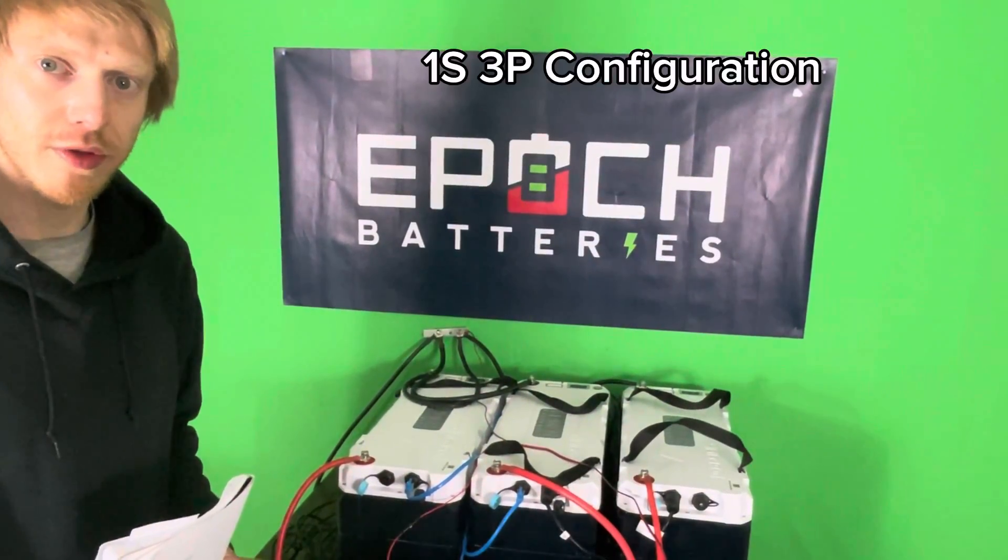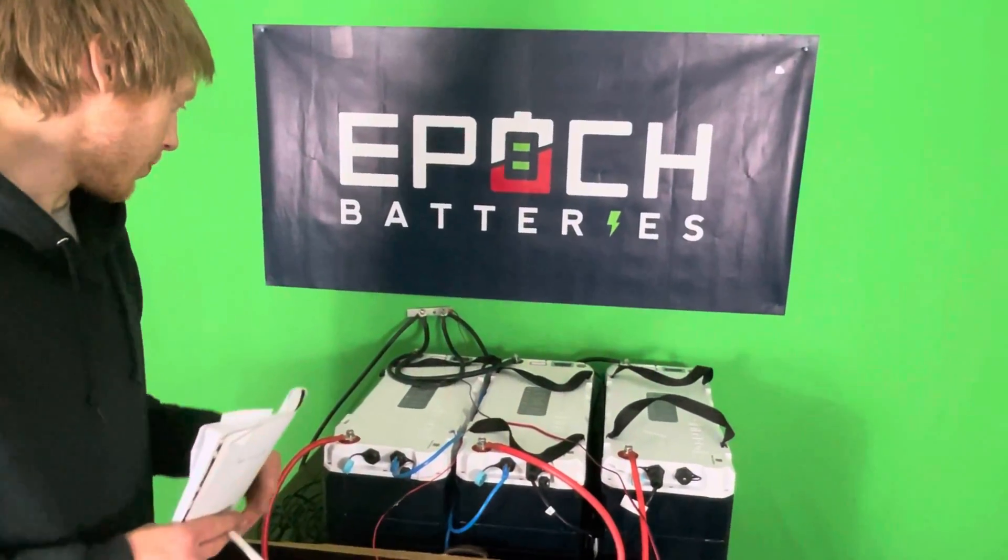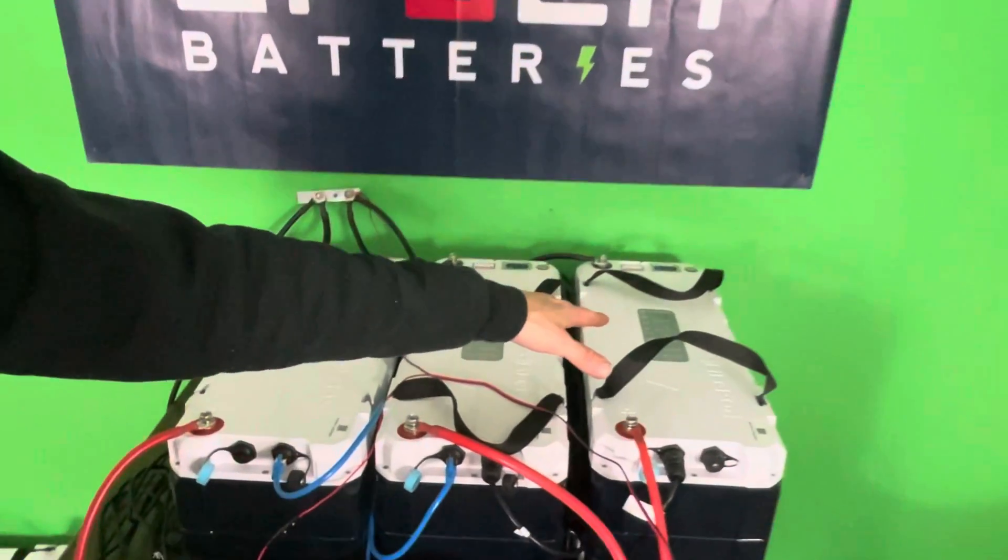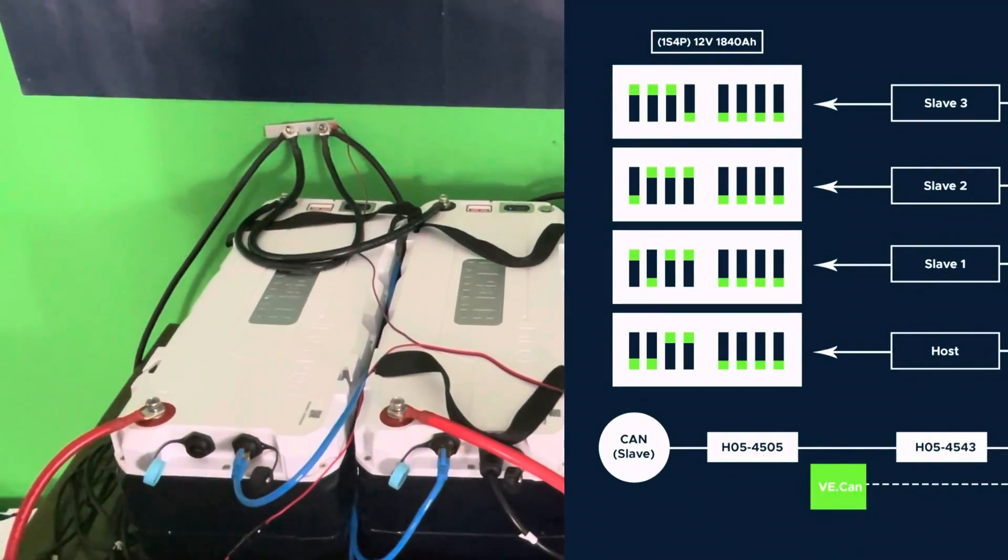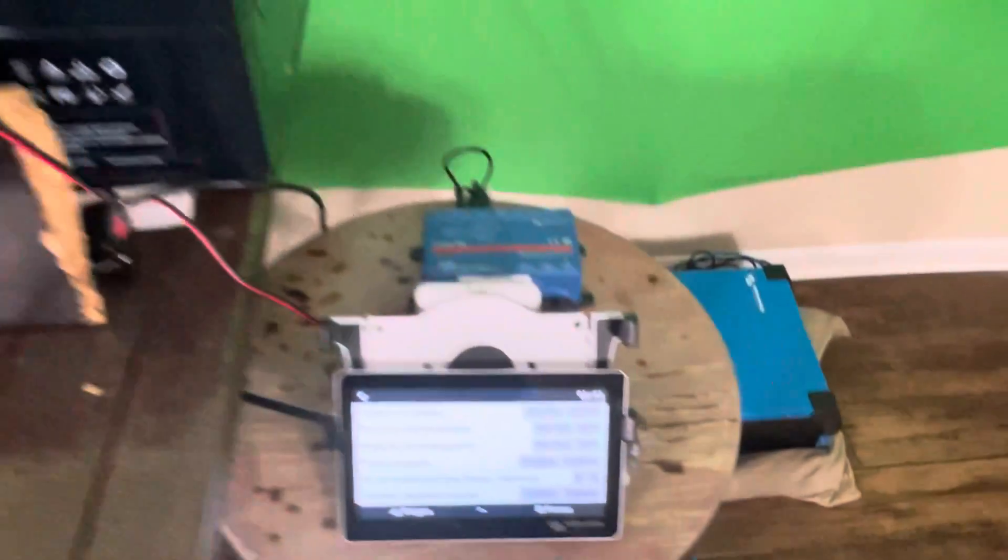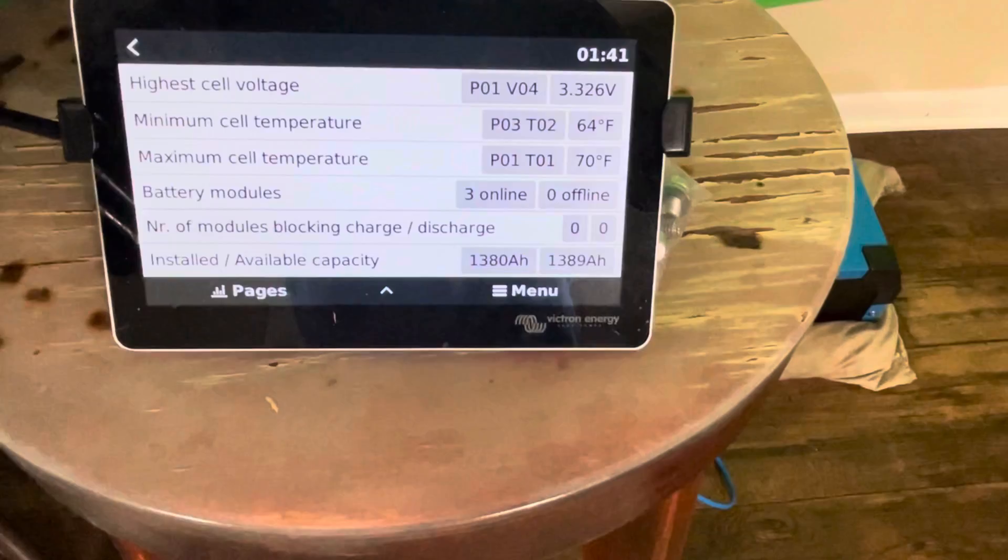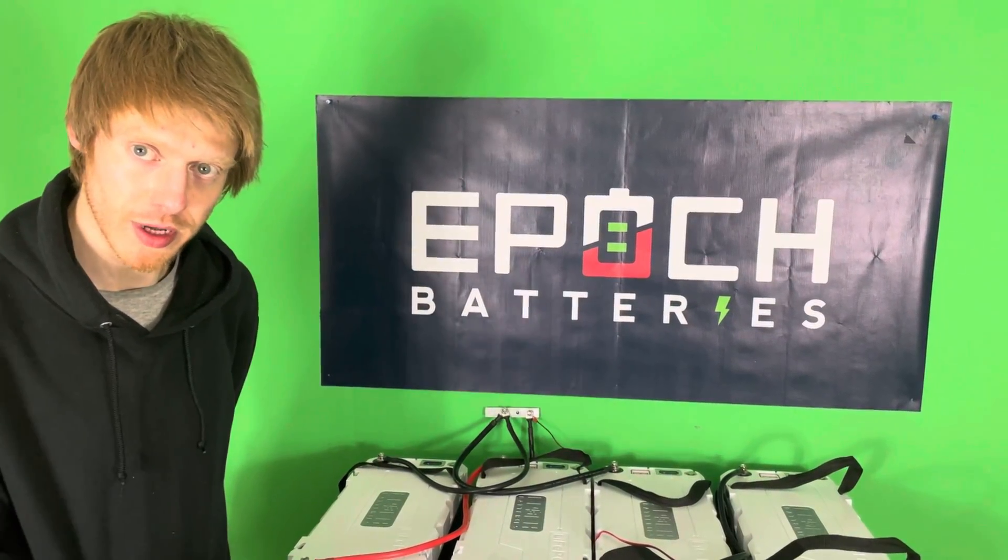Alright, so now we're going to discuss the 1S3P configuration, which is going to be each of these in parallel. And you can refer to the dip switch settings on the screen to adjust those accordingly, and to verify we can look up again over the Cerbo and see we have 1380 amp-hours. So that's all for this configuration and now on to the next.